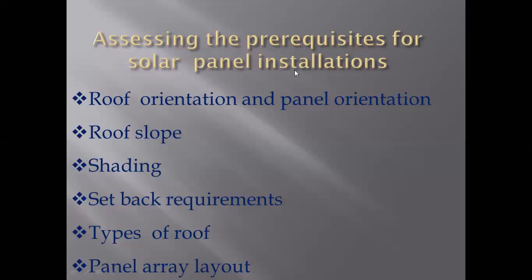We have a panel that we install. We can install it in the right direction — horizontal or vertical. In roof orientation, we can set it in the right direction: landscape, portrait, vertical, or horizontal. If we put the modules in the right direction, we can fit two modules. We can set the module structure in the right direction. This covers panel orientation.